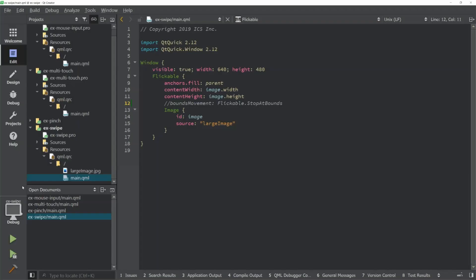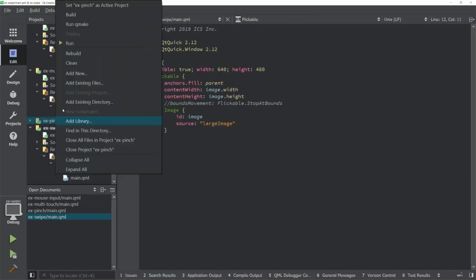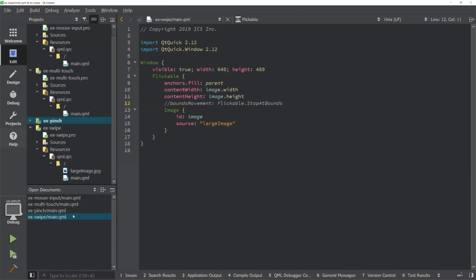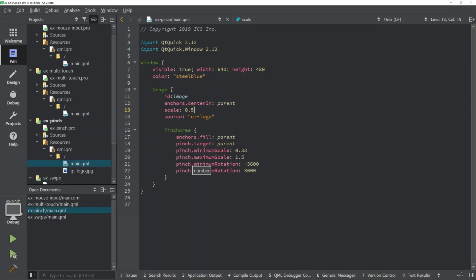And for an example of this, I have a simple pinch application here where we simply have an image. This image is a little big, so I've scaled it to half its size. And then we're doing what was on the slide here. We're filling the parent. We're setting the pinch target. And we're setting a minimum, maximum scale and rotation. Now, when I run this application.